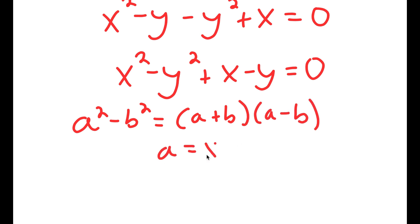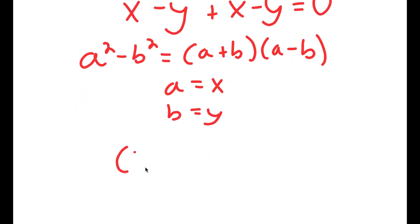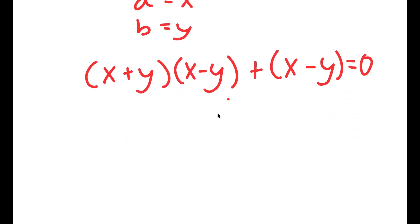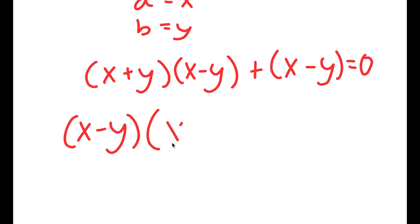In this case, a is x and b is y. So I get (x plus y)(x minus y) plus (x minus y) equals 0. Factoring out x minus y, I get (x minus y)(x plus y plus 1) equals 0.